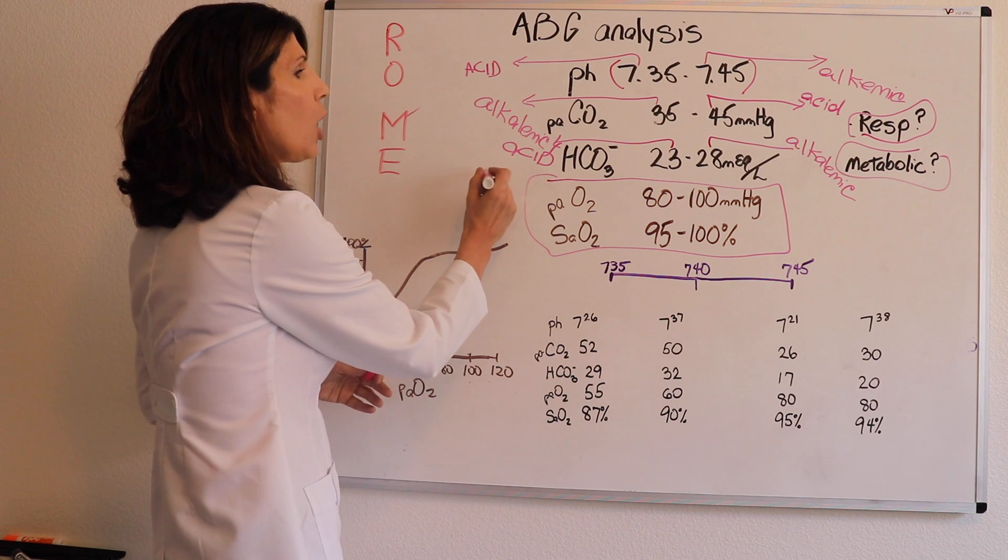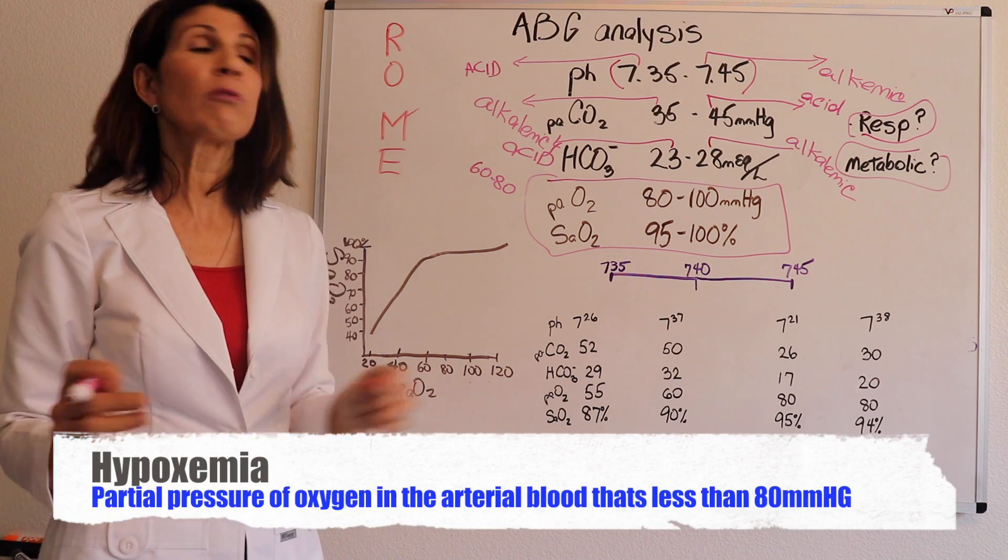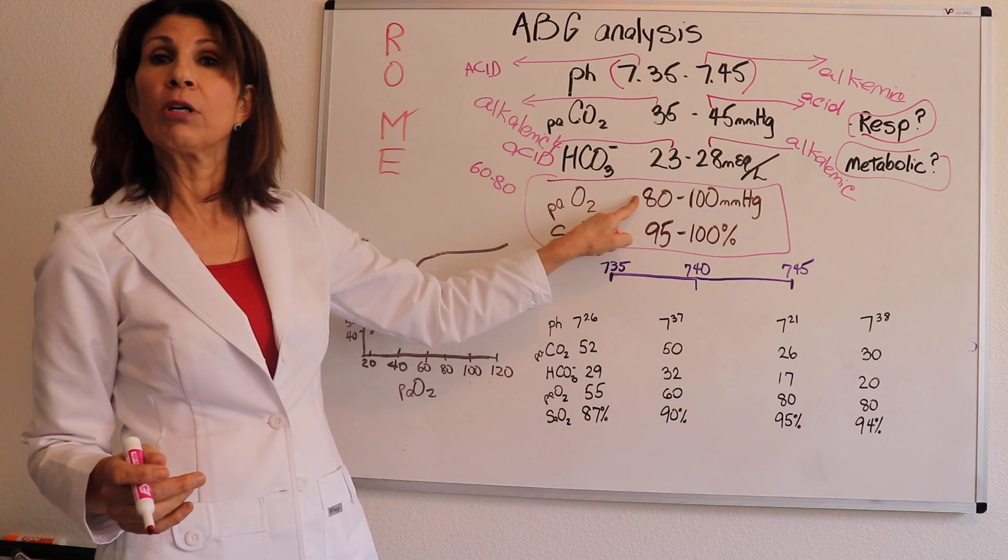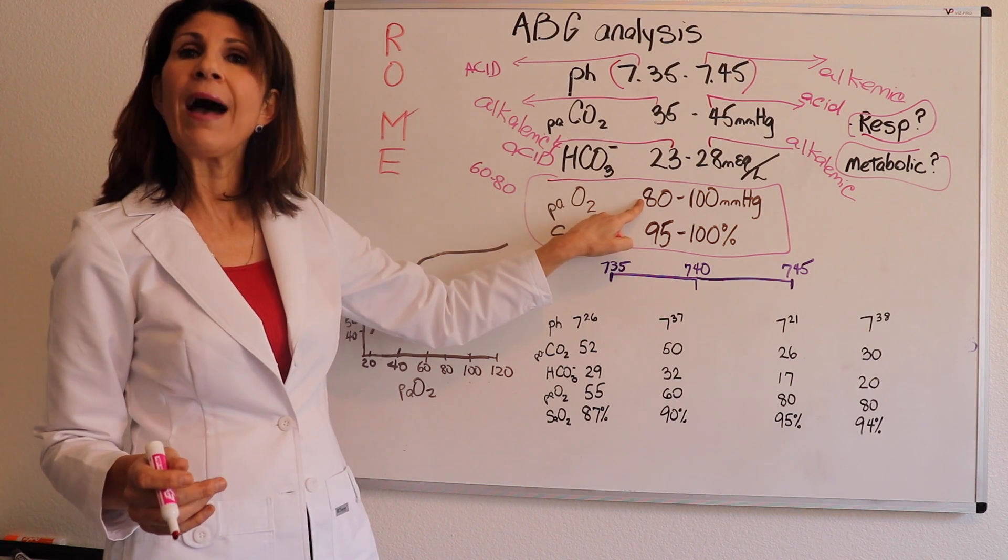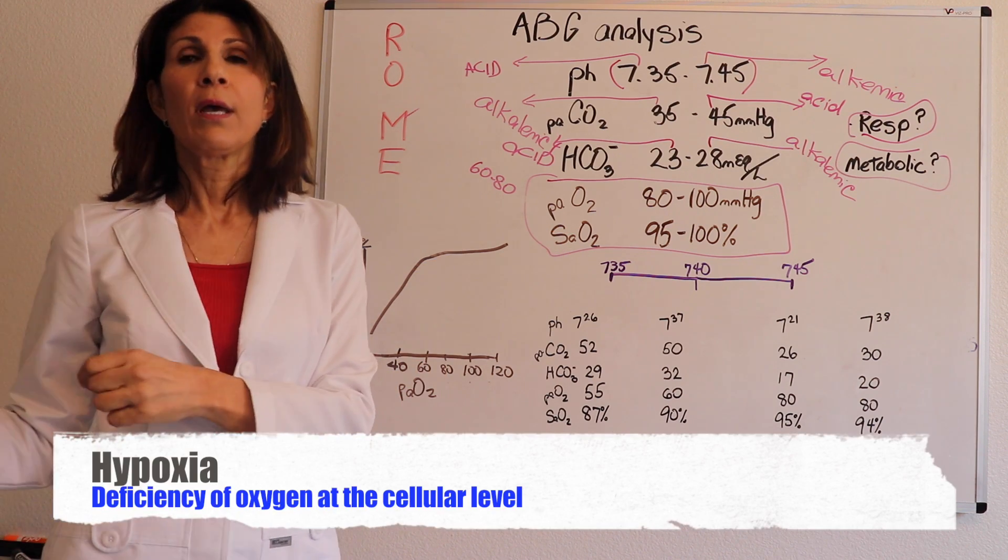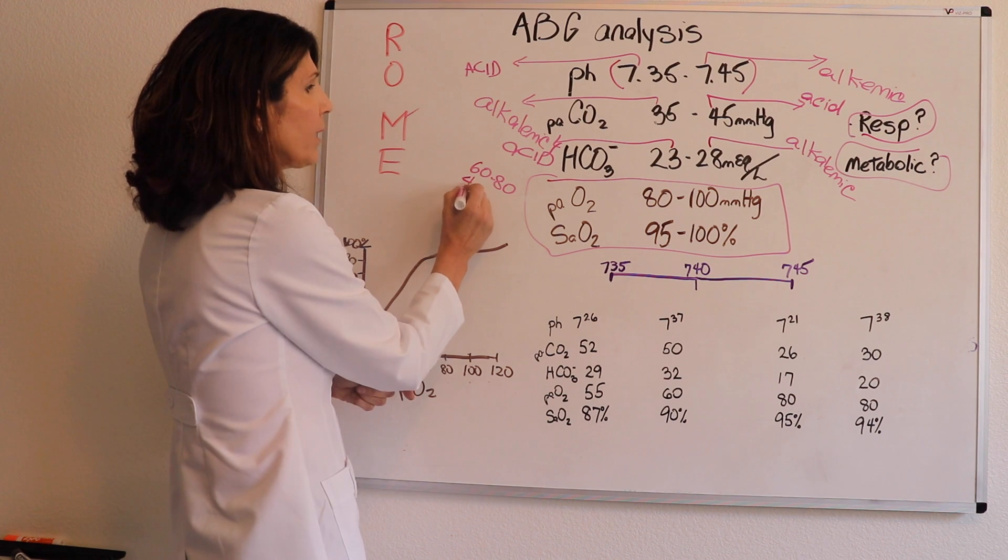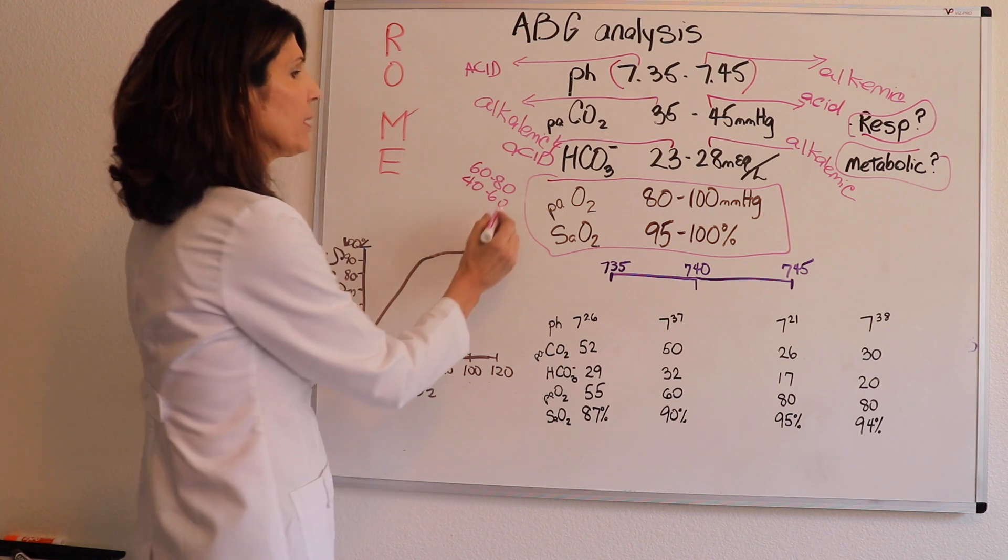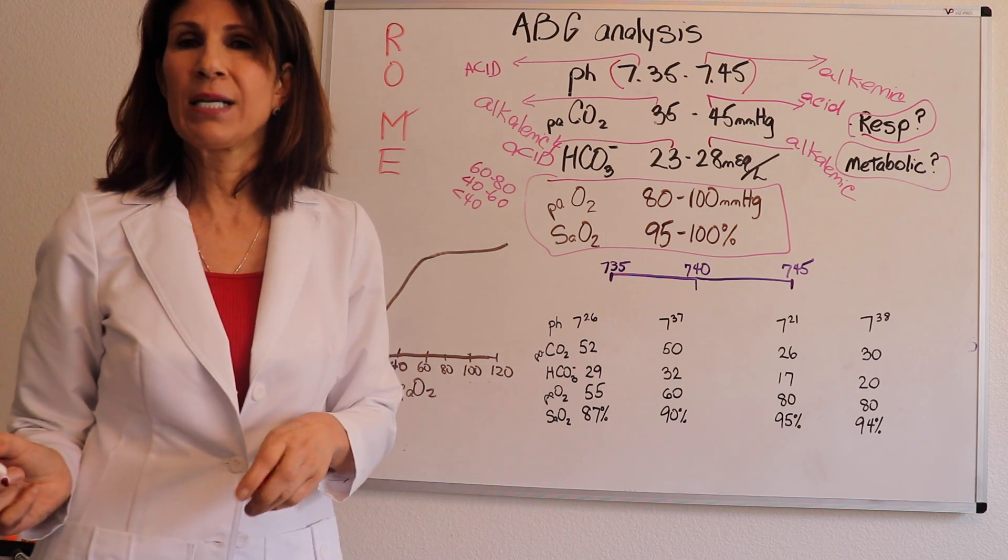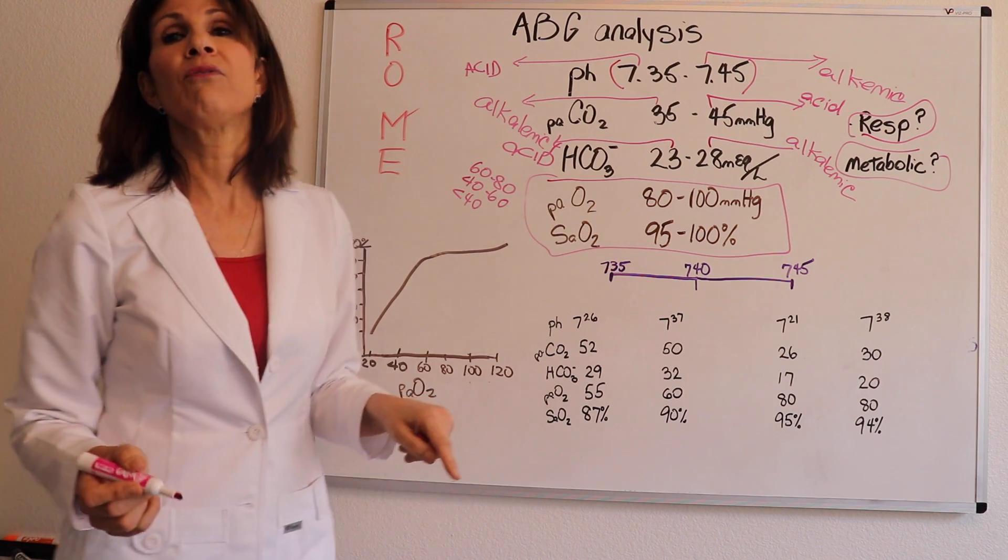And hypoxemia refers to a diminished value of this partial pressure of oxygen in the arterial blood. So hypoxemia really is referring to this value of PaO2 versus hypoxia, which is referring to a deficiency of oxygen at the cellular level. So there is that distinction that you need to know, be familiar with. So 40 to 60 is also hypoxemic. That's considered a moderate hypoxemia and less than 40 is considered a severe hypoxemia. So just know anything lower than 80 is considered hypoxemic, but then there are levels of hypoxemia.